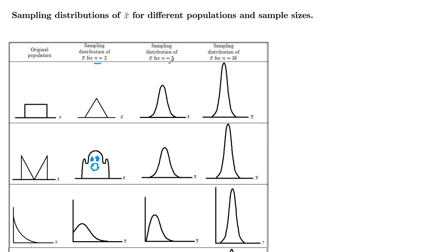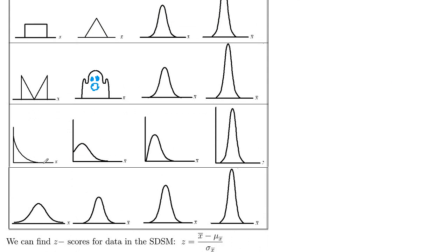And samples of size 5, repeated samples of size 5, now we're starting to see a normal distribution. And then sample size 30, normal distribution, and smaller standard deviation. So what we're seeing here is that no matter what distribution you start with, by the time you get to samples of size 30, then everything's approximately normal.